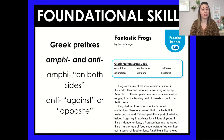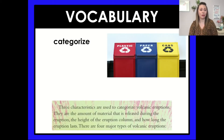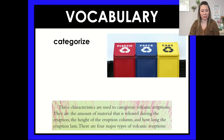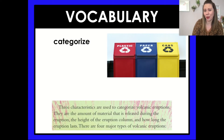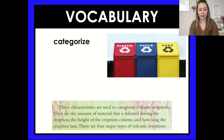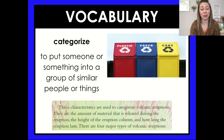Make sure that you practice reading these words and the story to the best of your ability and try to make it nice and smooth. For vocabulary today, we have the word categorize. You see these recycle bins here — sometimes we have to categorize our recycling. It says three characteristics are used to categorize volcanic eruptions: the amount of material released, the height of the eruption column, and how long the eruption lasts. Categorize means to put someone or something into a group of similar people or things.